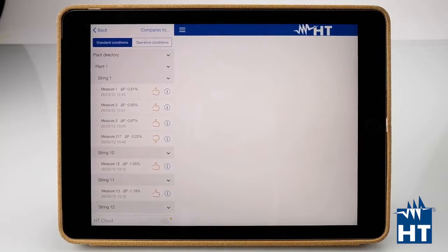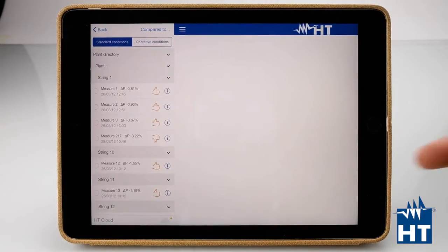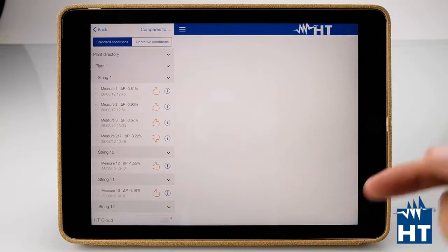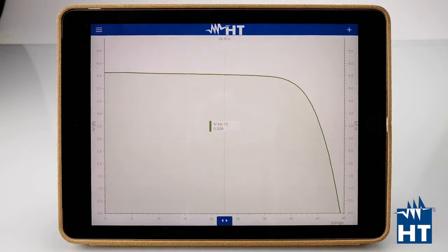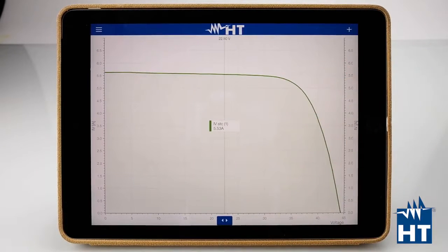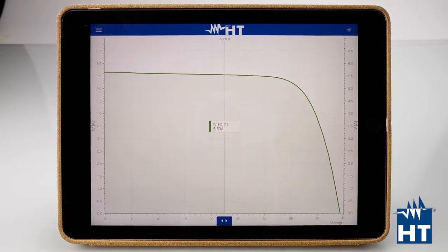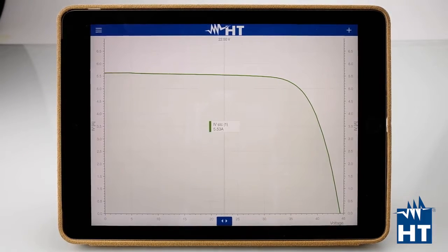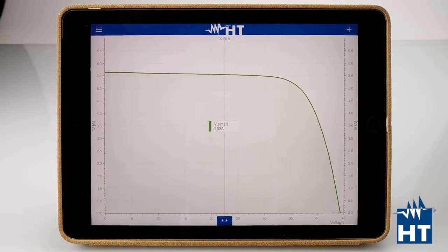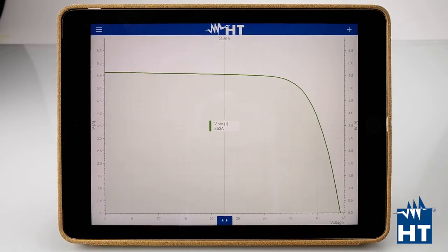Here we have plant one that we downloaded before. We can find, for example, measure one, measure two, measure three. Each measure is an I-V curve. So let's test one. IVSTC is our I-V curve measure already compared with the standard test conditions. So the calculation compared with the manufacturer data is already done by the app.